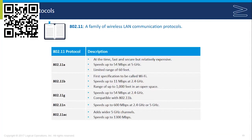Wi-Fi is the 802.11 family of connectivity. They all use radio frequencies — the 2.4 GHz and 5 GHz frequency bands — and they operate at varying distances and speeds. The original 802.11 tapped out at 1 megabit per second, which we no longer use. The first one to be called Wi-Fi was 802.11b, with speeds up to 11 Mbps at 2.4 GHz, a range of up to 1,000 feet in open spaces, or 200–400 feet in enclosed spaces due to walls.